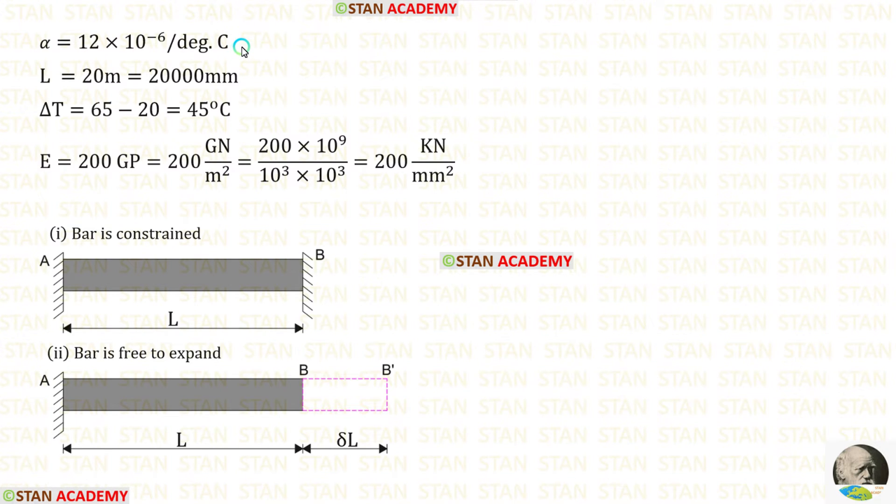First, let us make the given data. Alpha is given. Length is given in meter. We can convert that into millimeter. Delta T is equal to 65 minus 20. We will get 45.